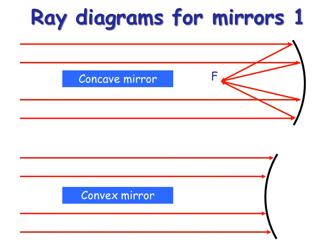For convex mirror, the rays will diverge, they'll move apart and therefore they won't meet at a point, so you have to draw an imaginary ray lines backwards to find a virtual focal point behind the mirror.